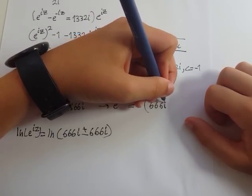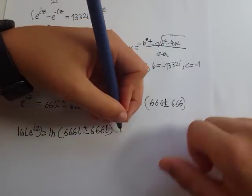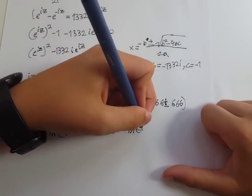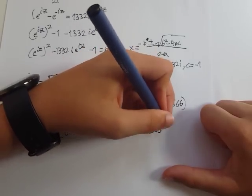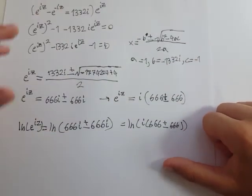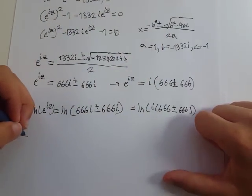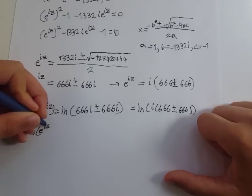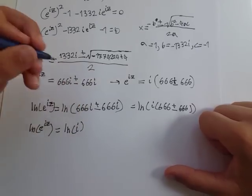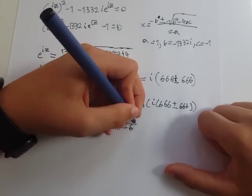This will make it a lot easier. Natural log of i times 666 plus or minus 666. Natural log of something times something, we can break this up into two natural logs. So natural log of e to the iz is natural log of i plus natural log of 666 plus or minus 666.